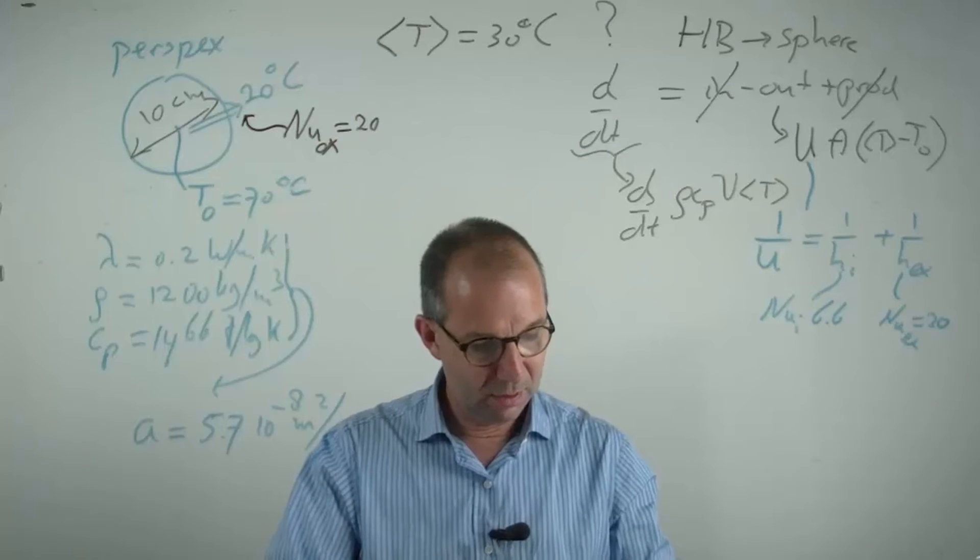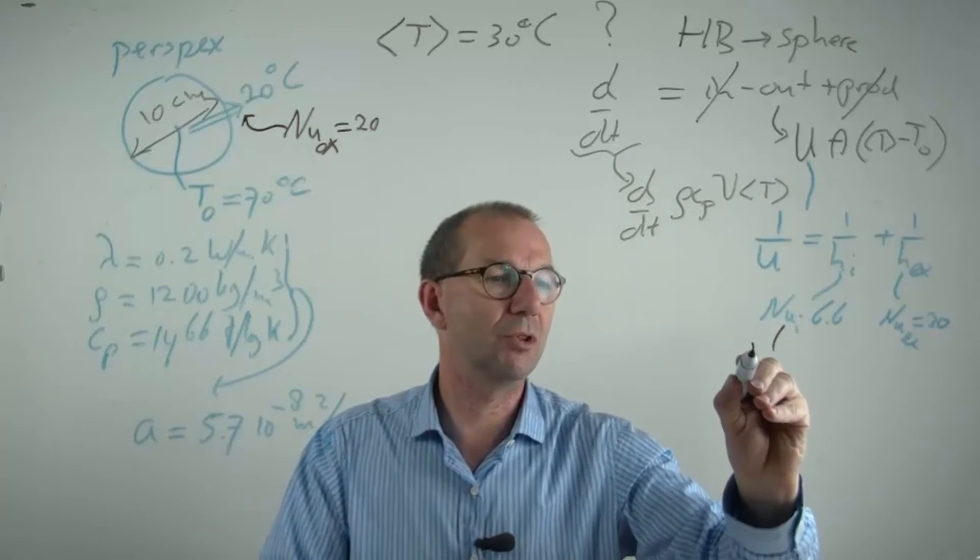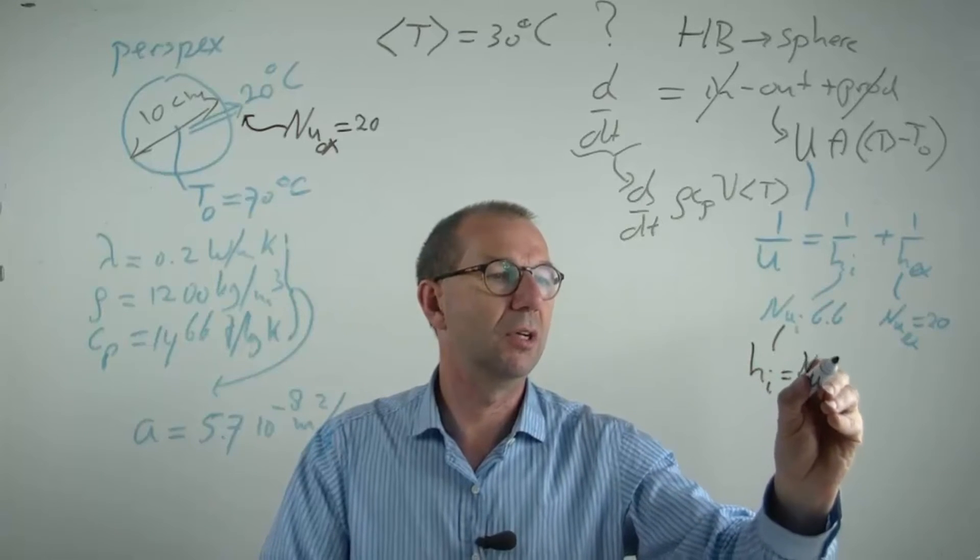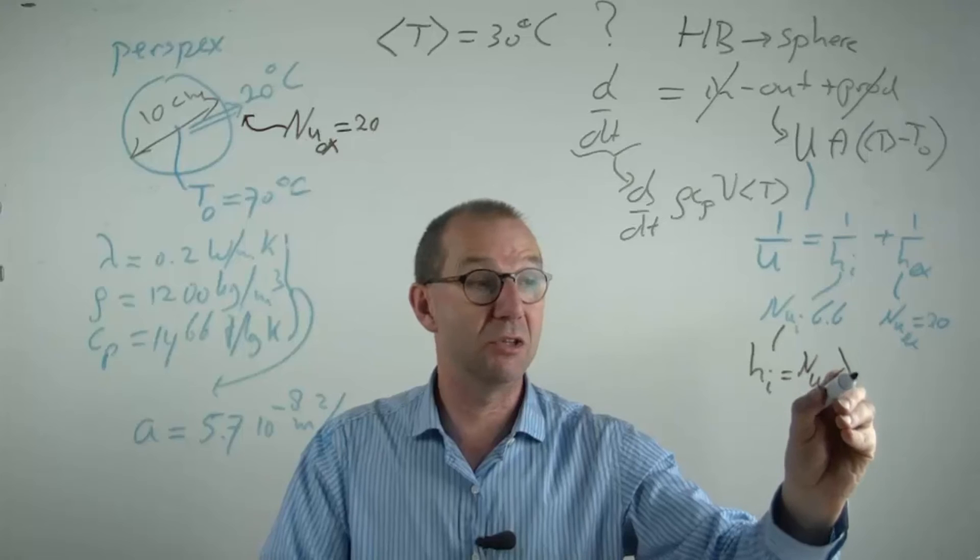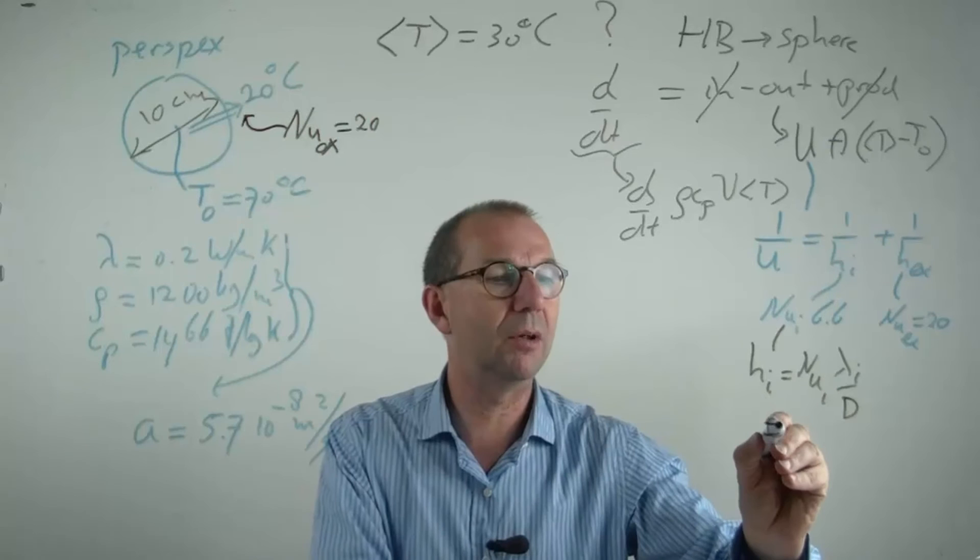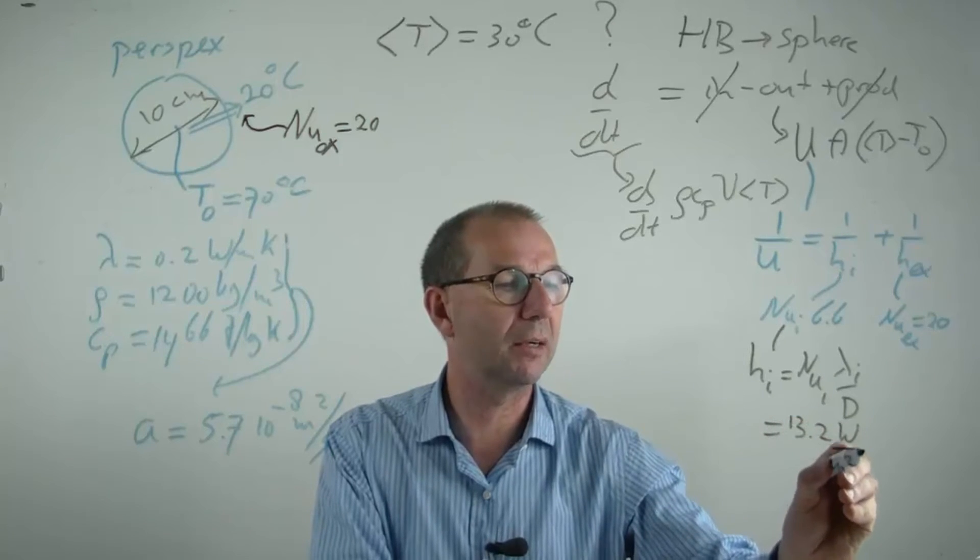Once I know the Nusselt numbers, I can compute H. So the internal H is Nusselt internal times lambda internal over the diameter. And I computed that and I got out a number 13.2 Watt per meter squared Kelvin.